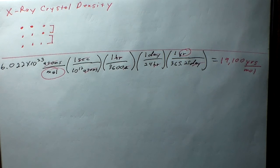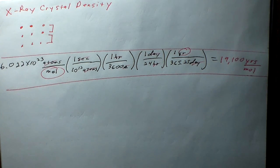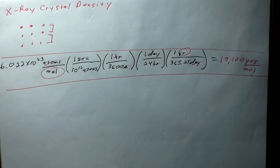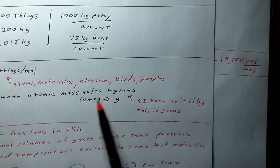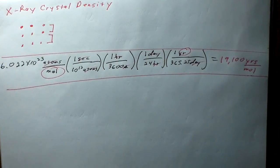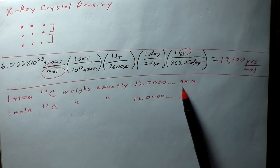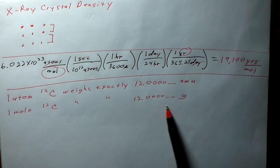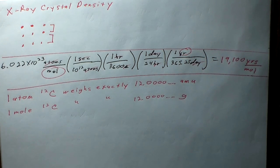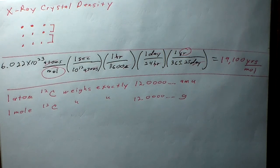The mole is defined as the amount of atoms in exactly 12 grams of carbon-12. This is a nice way to convert between atomic mass units and grams. One atom of carbon-12 weighs exactly 12.0000 AMU, and one mole of carbon-12 weighs exactly 12.000 grams. You might wonder: why use carbon-12 as the standard instead of hydrogen?